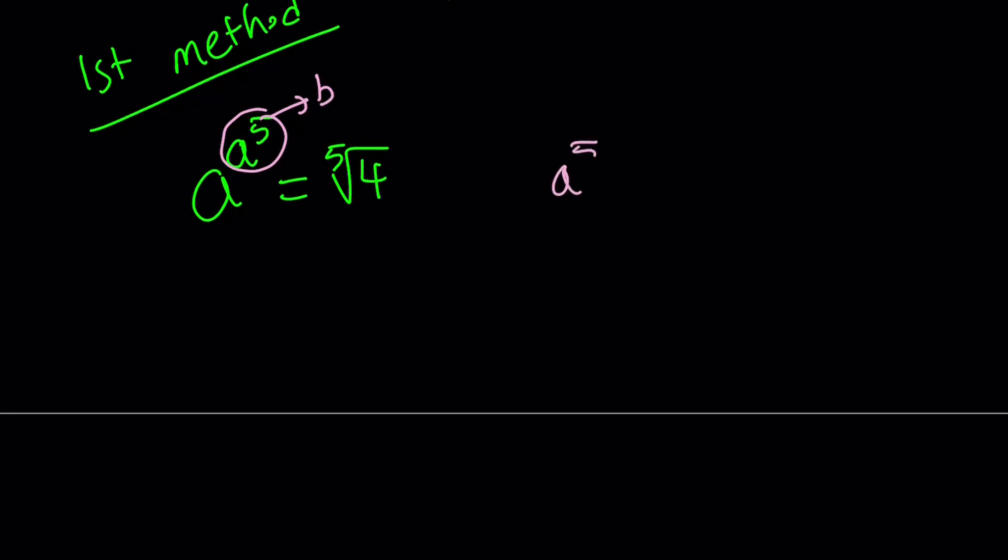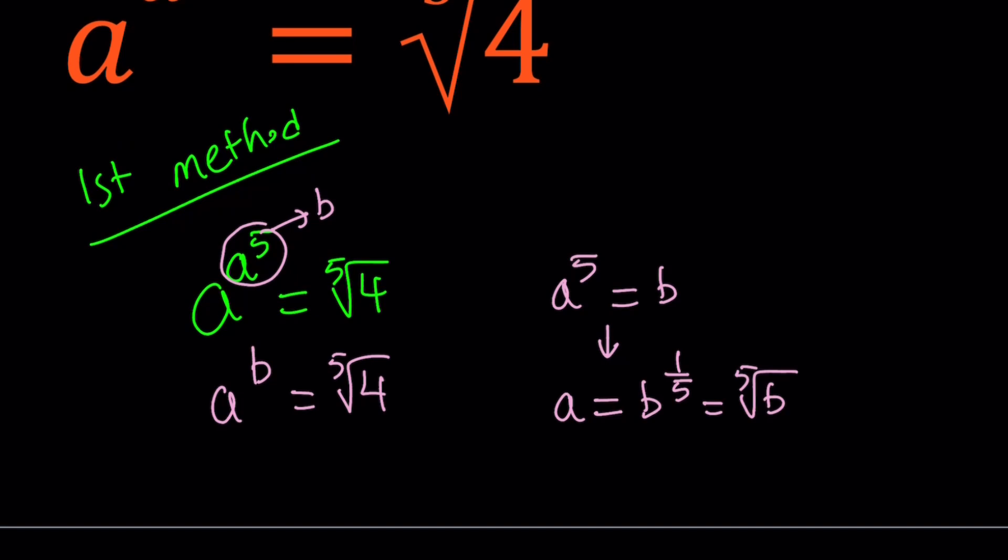So we say a^5 = b. This implies that a^b = ⁵√4. We've turned it into a system where we can substitute. Since a^5 = b, I can say that a can be written as b^(1/5), or the fifth root of b. Here, a and b don't have to be positive, but at the end, they're going to have to be positive anyways.